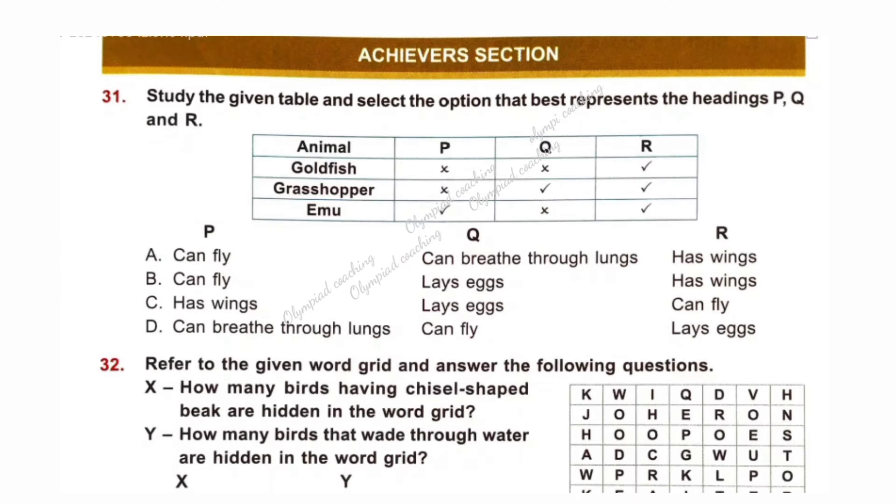Achiever section. Question number 31. Study the given table and select the option that best represents the headings P, Q and R. This column is about animals and P, Q are about their habits. From the options, option D is correct because P is breathe through lungs. Man breathes through lungs whereas goldfish through gills and grasshopper through spiracles. So P is lungs. Q is can fly or not. Man and goldfish cannot fly whereas grasshopper can fly. R is about legs. So option D is correct.